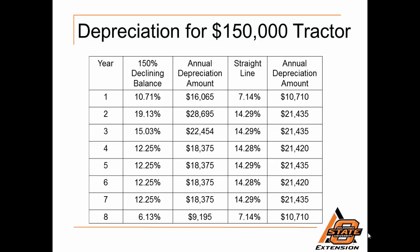Looking at a $150,000 tractor to get an idea of annual depreciation: in the first year, the declining balance method allows $16,000 compared to $10,700 under straight line. You can see that in years four through eight, the amount written off under declining balance is much less than under straight line. So if income is high in the year of purchase and in future years, using declining balance gives a greater write-off and greater tax benefit.